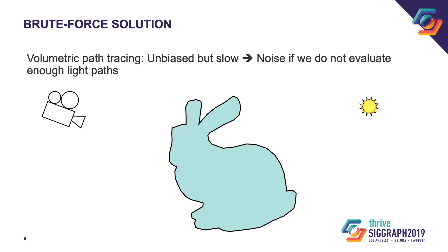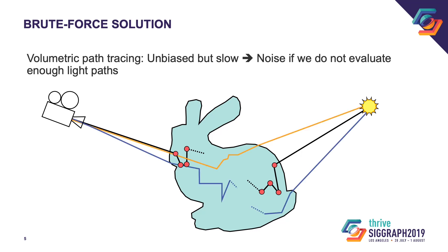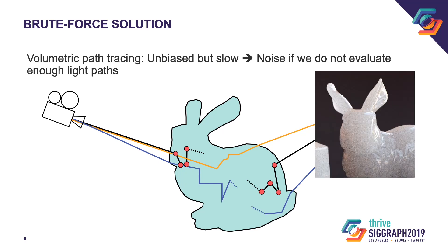The brute force way of rendering subsurface scattering is to use volumetric path tracing. We start by tracing a light path from the camera, and then simulate internal scattering events until it eventually hits a light source. We have to sample many of these light paths to obtain a converged image. Constructing each one of these light paths is expensive, as we have to simulate up to hundreds of scattering events inside of the object. If we do not evaluate enough light paths, we get a noisy image, which is of course very undesirable.